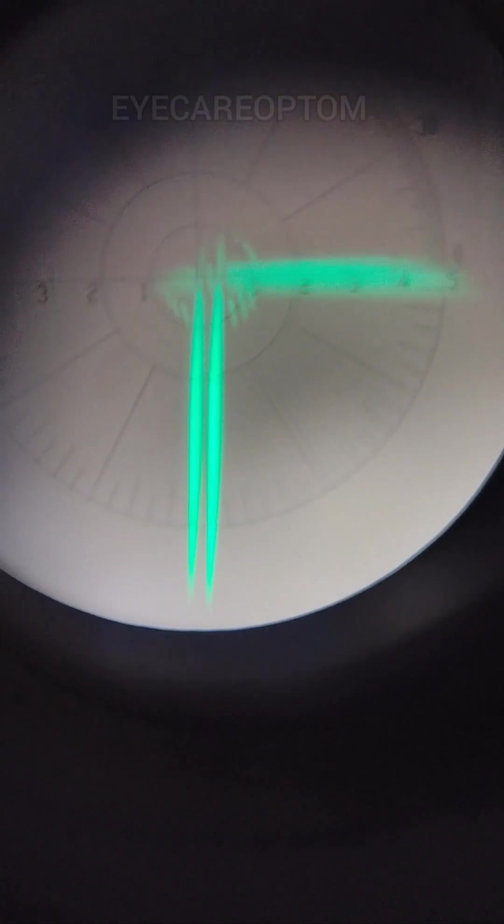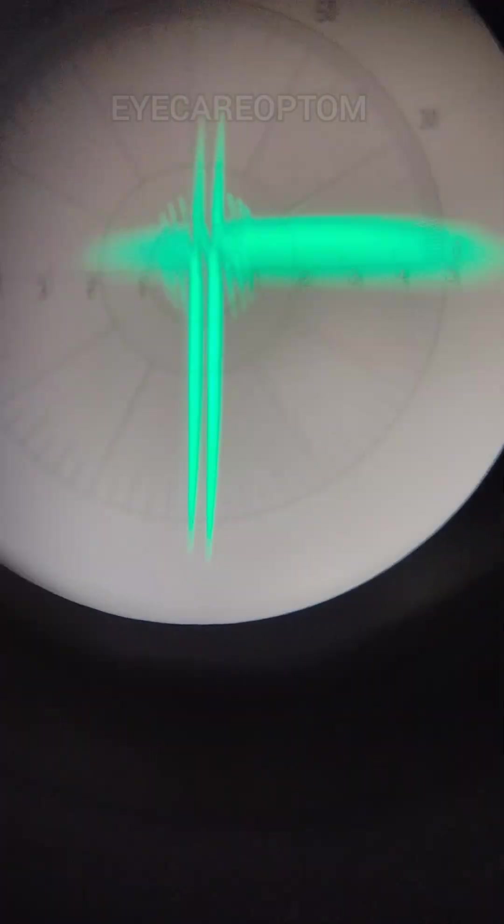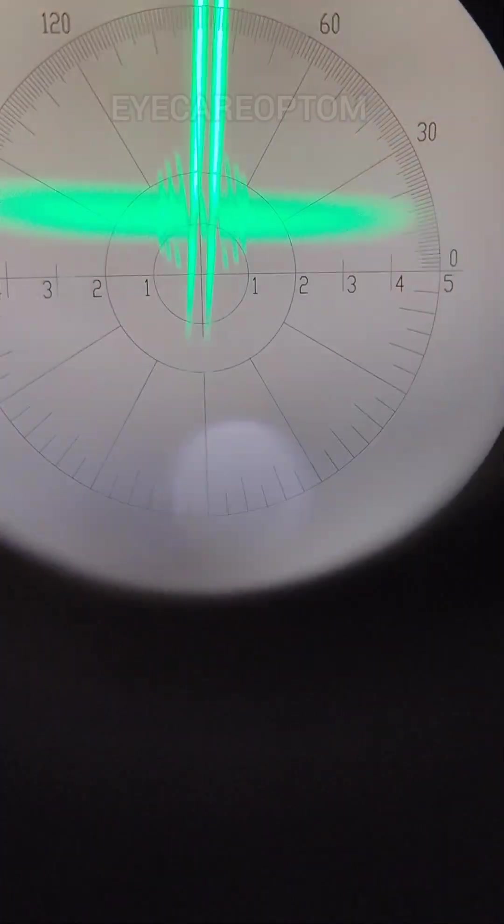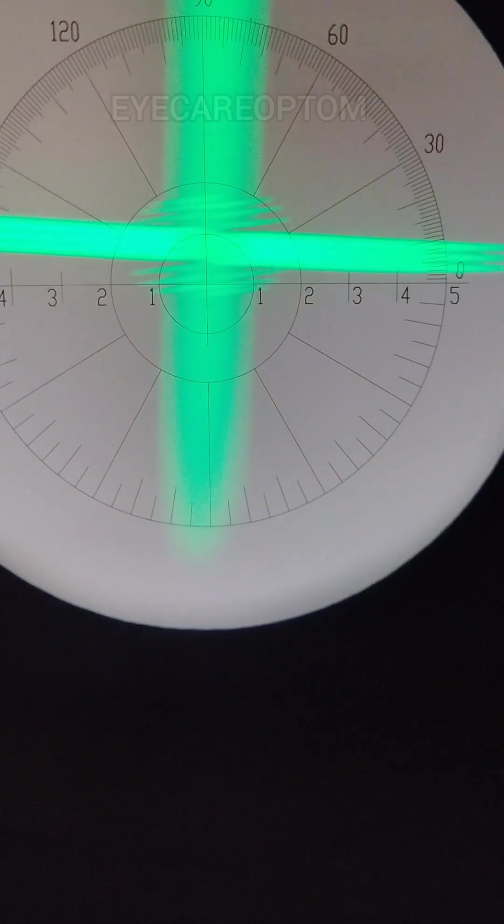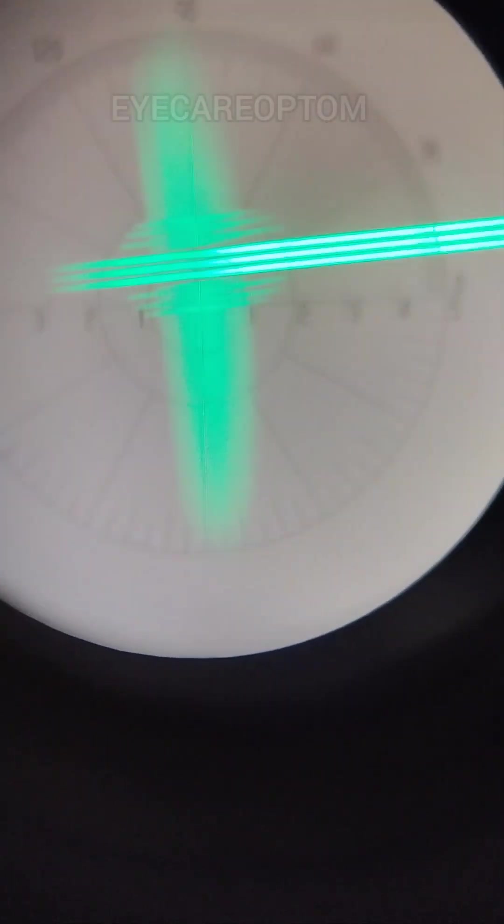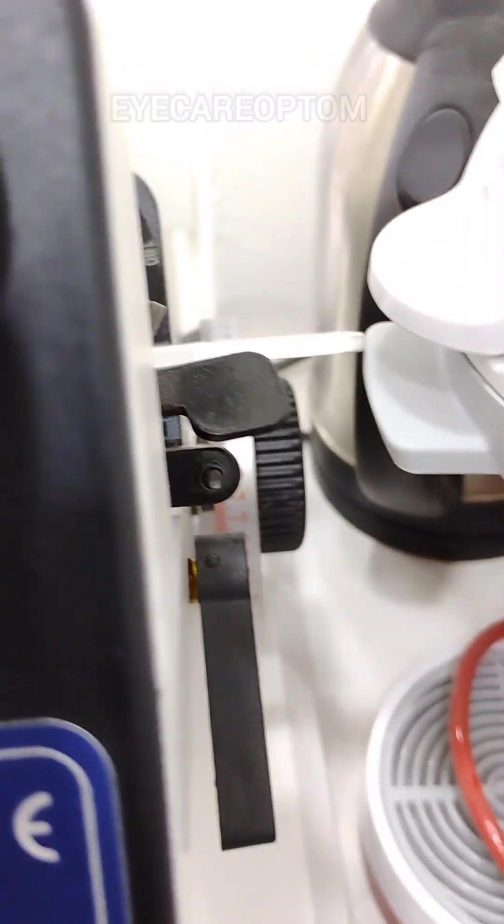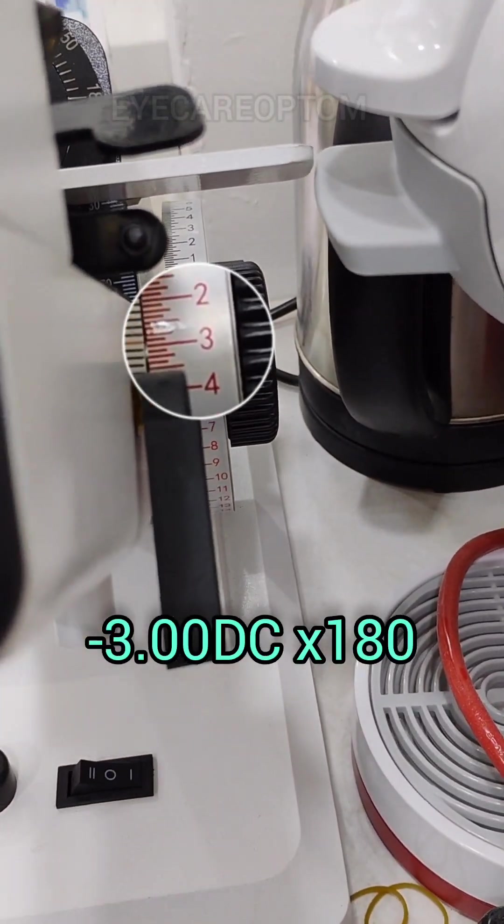See here, 90 is clear and 180 is blurred. It means 180 axis has a power. Rotate your power drum and check your power. The power is minus three diopters, 180 axis.